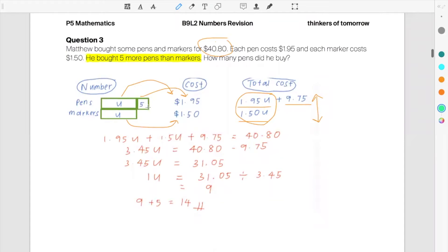Five more pens, and then you're given the value of each marker and each pen. Each marker costs $1.50. What is the cost of the total markers? That would be one unit times 1.5, 1.5U.